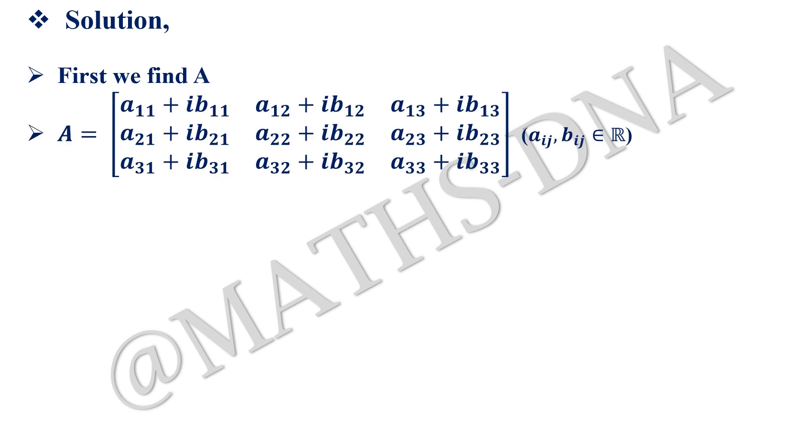As per the given data, we have the dimension of A where A = [a₁₁ + ib₁₁, a₁₂ + ib₁₂, ..., a₃₃ + ib₃₃], where aᵢⱼ and bᵢⱼ belong to ℝ, that is the set of real numbers, and a₁₁ + ib₁₁ and all are complex entries.